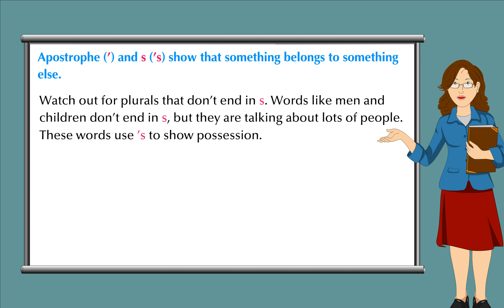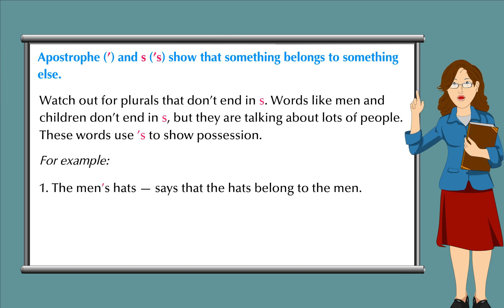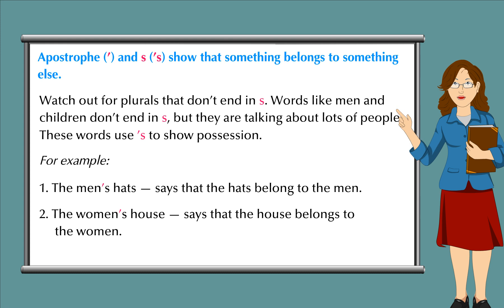Watch out for plurals that don't end in 's'. Words like 'men' and 'children' don't end in 's', but they are talking about lots of people. These words use apostrophe 's' to show possession. For example: 1. The men's hats says that the hats belong to the men. 2. The women's house says that the house belongs to the women.